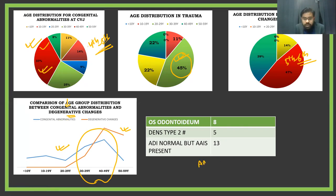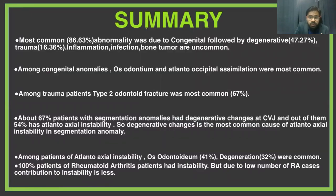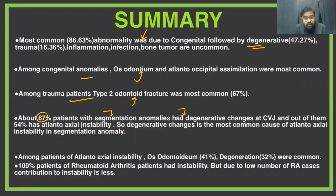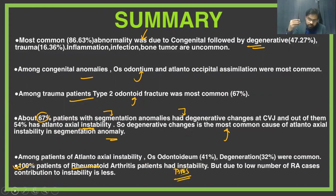Coming to atlanto-axial instability, it is well known that an increased ADI interval indicates atlanto-axial instability. However, one important point is that even with a normal atlanto-dental interval, the patient may have atlanto-axial instability — in our study this number was 30. In summary, the most common abnormality was congenital, followed by degenerative. Among trauma patients, type 2 odontoid fracture was most common. About 67% of patients with congenital anomalies also had degenerative changes, and 55% of patients with degenerative changes also had atlanto-axial instability. All rheumatoid arthritis patients had atlanto-axial instability, though the number in our study was only 2, so this was not statistically significant.